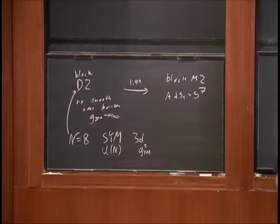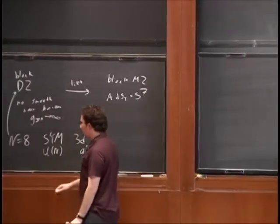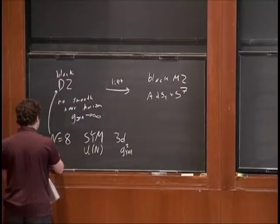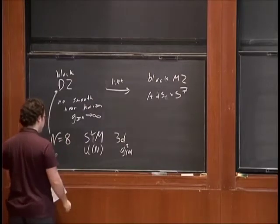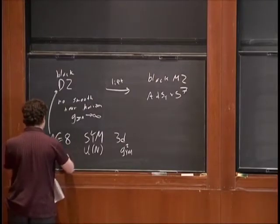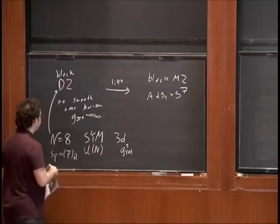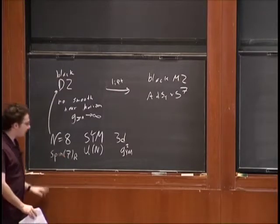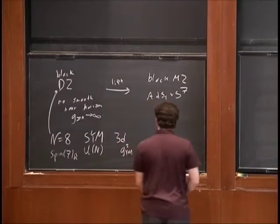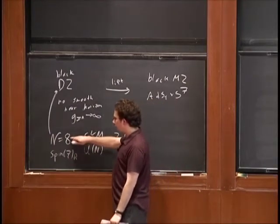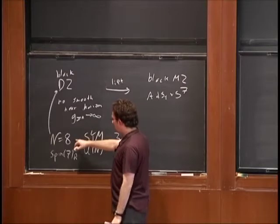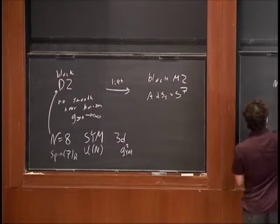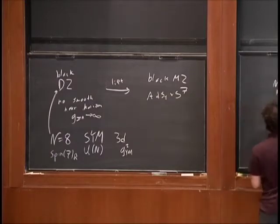First of all, it does have a lot of supersymmetry — N=8 supersymmetry. But it doesn't have the full Spin(8) R-symmetry that a conformal field theory in three dimensions with N=8 would have to have; it has only a Spin(7) R-symmetry. This is realized geometrically: the transverse space to the D2 brane is seven-dimensional, so it has a Spin(7) R-symmetry. We can discuss this theory in both N=4 language and N=2 language.